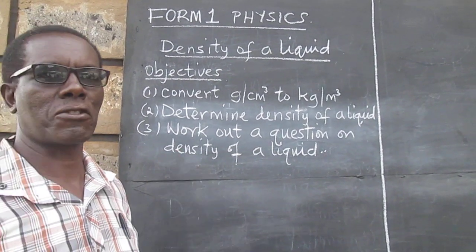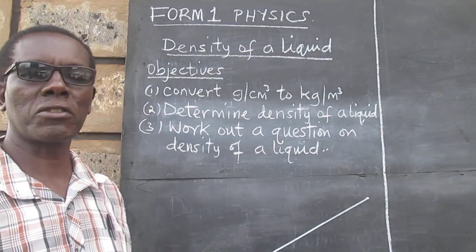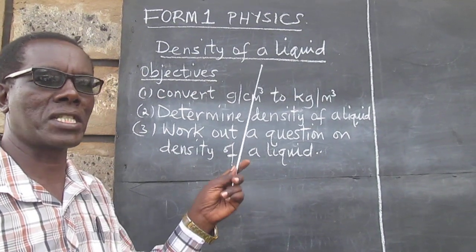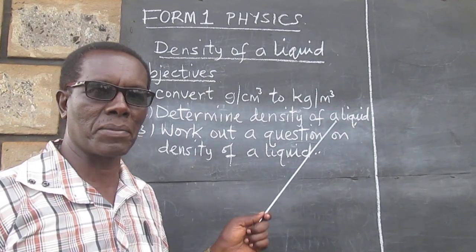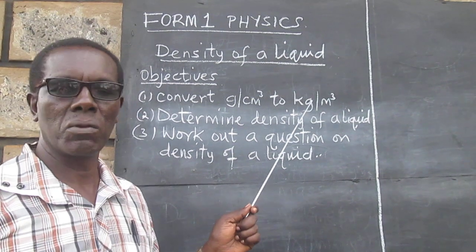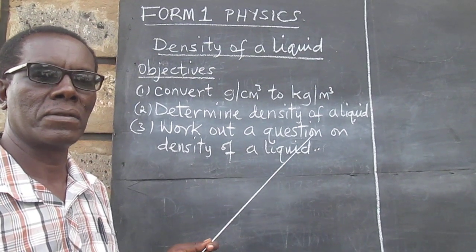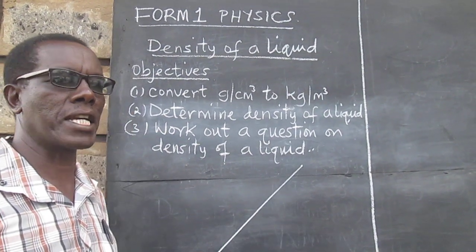Now let's move to our first objective. We would like to convert the density of pure water, which is 1 gram per cubic centimeter, to kilogram per cubic meter, which is the standard unit for density.